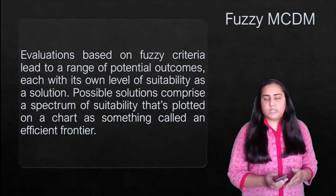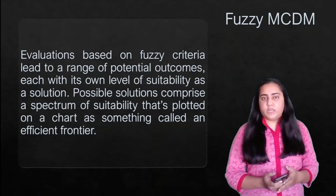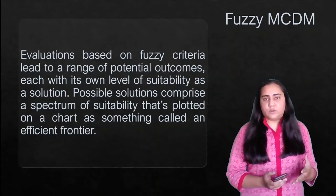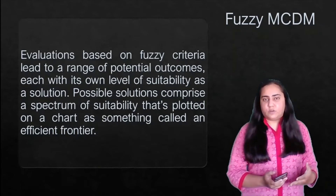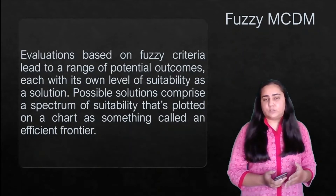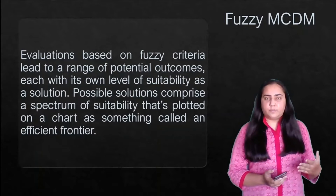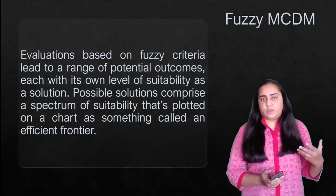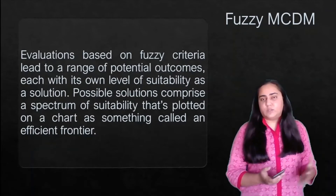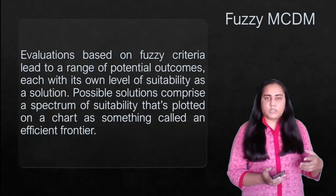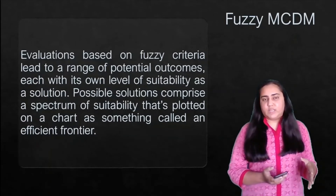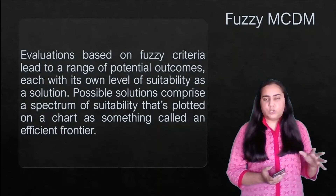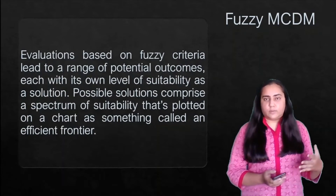Evaluations based on fuzzy criteria lead to a range of potential outcomes, each with its own level of suitability as a solution. Possible solutions comprise a spectrum of suitability that's plotted on a chart as something called an efficient frontier. In fuzzy MCDM, you assign a value between zero and one for each criterion, plot all those values on a chart to create an efficient frontier, and then decide which site you want for your project.